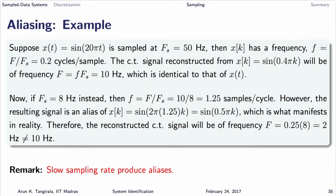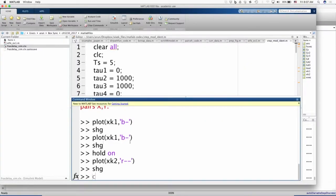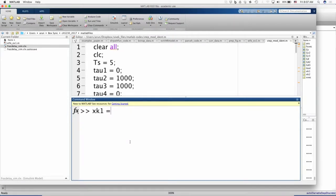When you sample a signal of 10 hertz at a frequency of 8 hertz, you end up with a discrete time sine wave of frequency 1.25 which then manifests as 0.25. I asked you to generate this sine wave in MATLAB as a simple homework — let us actually do this as a very simple example.